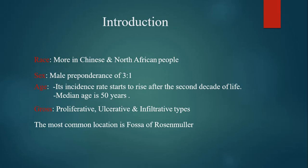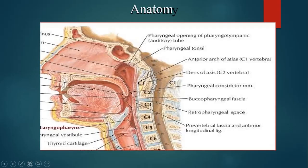You can recall from anatomy that the fossa of Rosenmuller is a recess which is present behind the opening of the Eustachian tube. As you can see in this picture, this is the opening of the Eustachian tube and behind it, this is the region of the fossa of Rosenmuller.